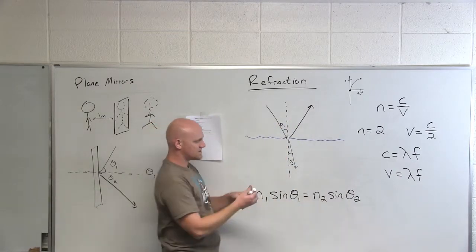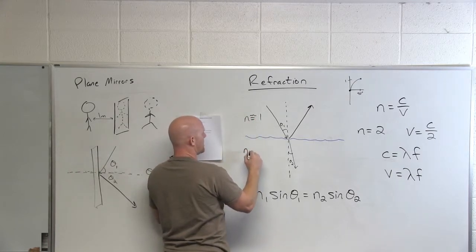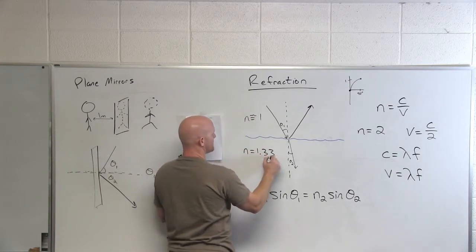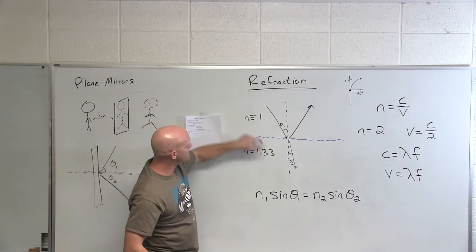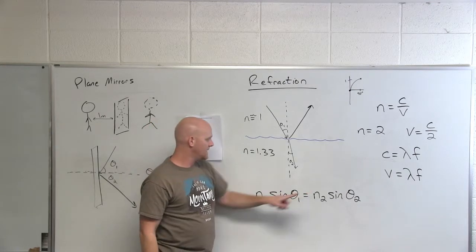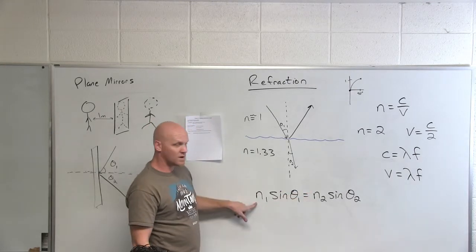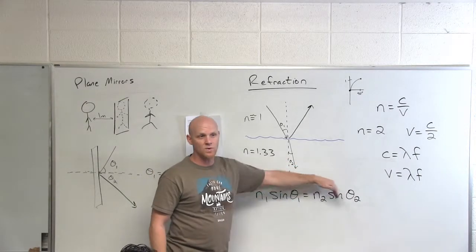Here, it turns out the index of refraction for air is approximately one. And here for water, the index of refraction is 1.33. So from one medium where I start to the medium I'm going into, what's happening to the index of refraction? It's going up. And so if n2 is bigger than n1, that means that sine theta 1 is going to have to be bigger than sine theta 2 to maintain this equality.